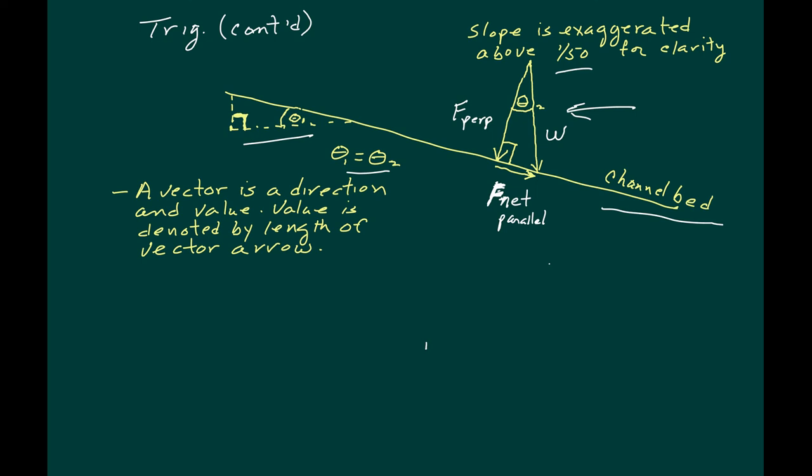Now we know that sine theta equals opposite divided by hypotenuse which is approximately equal to tangent opposite over adjacent which equals slope.